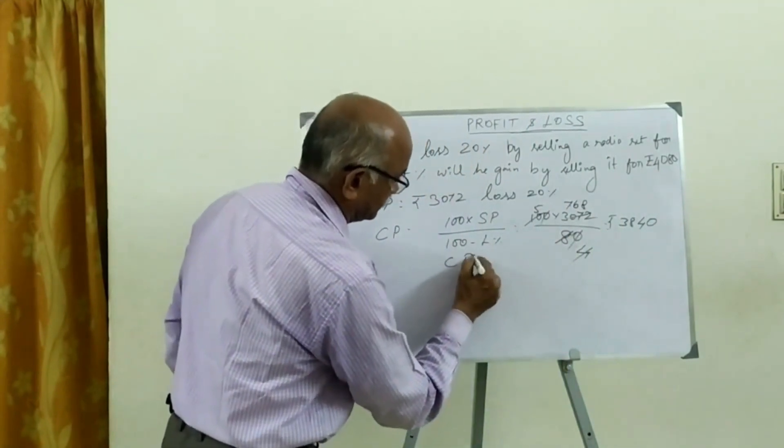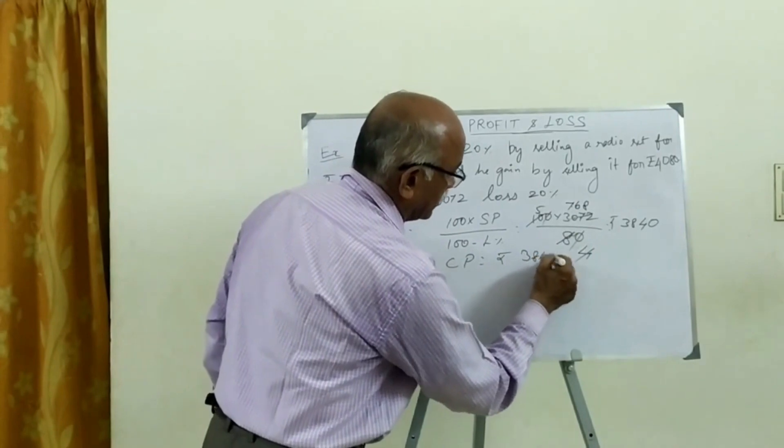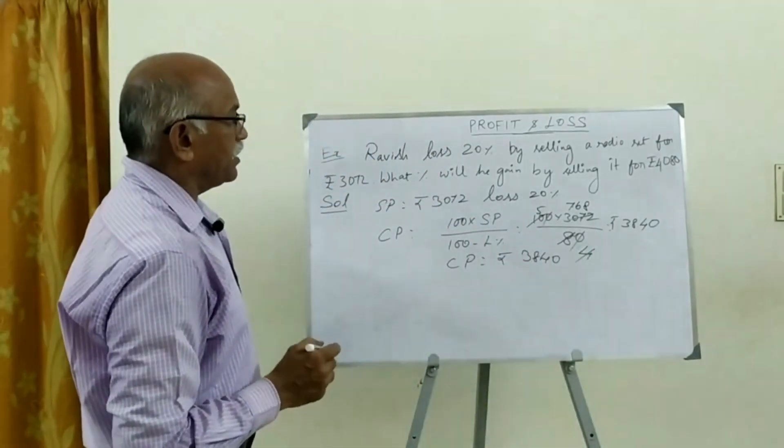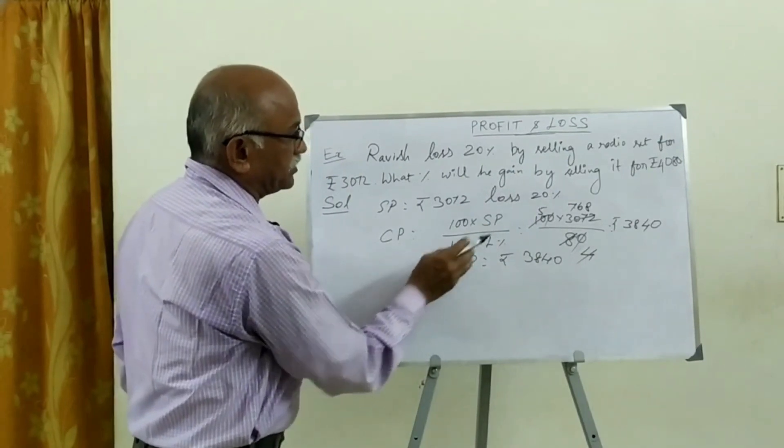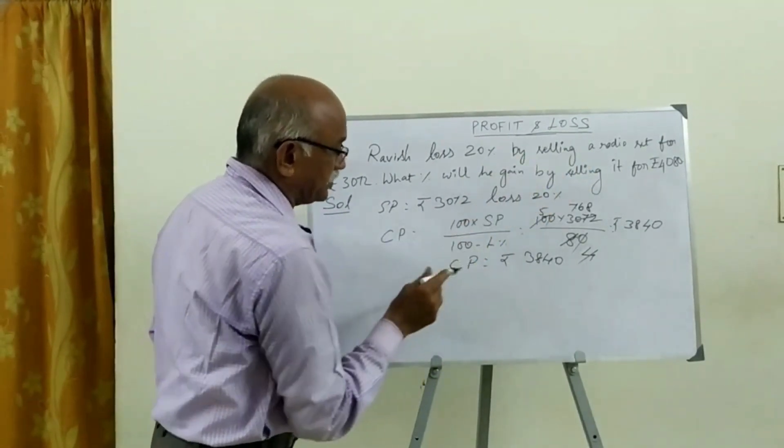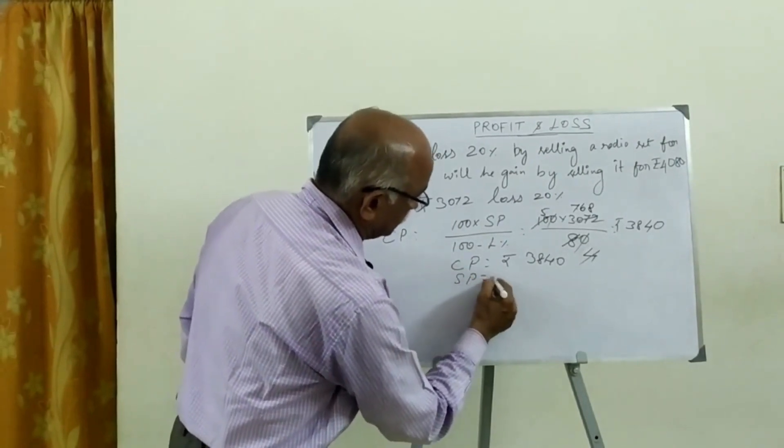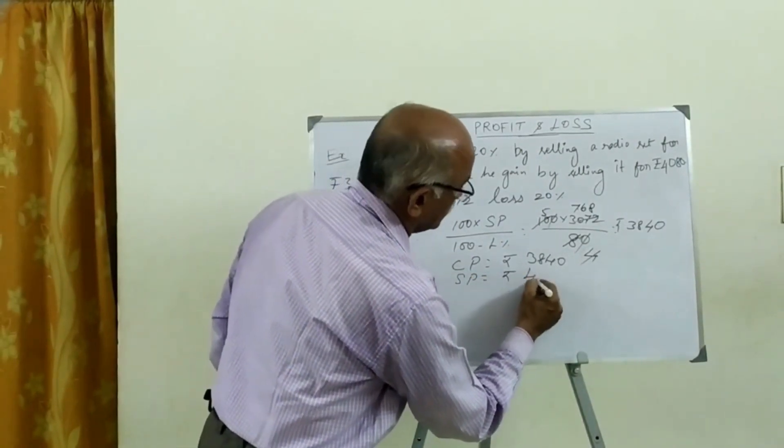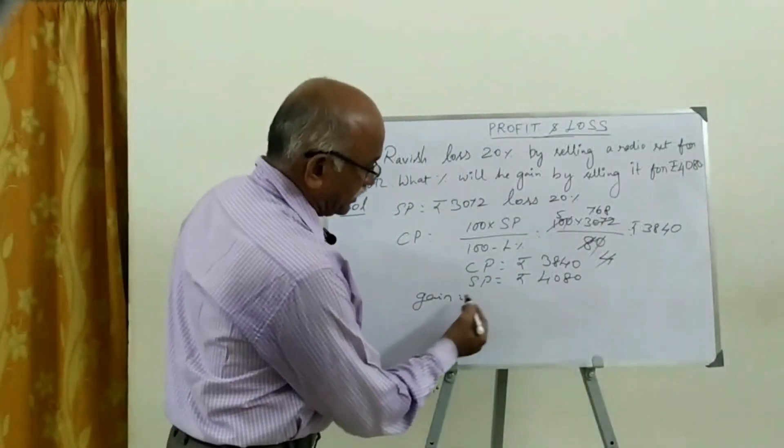Now let's look at CP. This is CP. This is SP is 4080. What is the question? SP is equal to 4080. What is the gain?